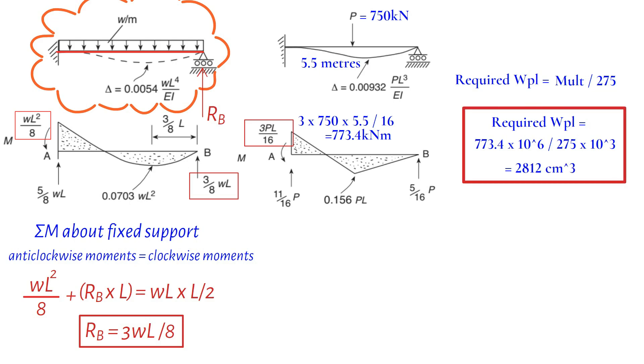Based on the provided data, we have selected a suitable universal beam with dimensions of 533 mm by 210 mm and a weight of 122 kg per m, along with a plastic modulus of 3200 cm³.